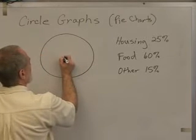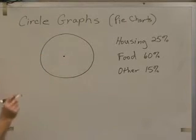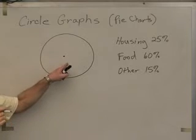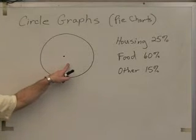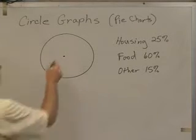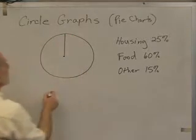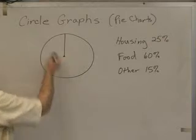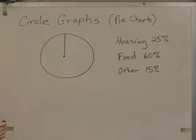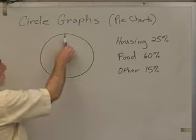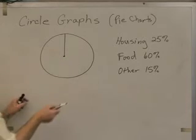Every line that's part of a circle graph is a radius of the circle, meaning it comes out of the center of the circle. And we always start at 12 o'clock. So the first line that we draw is from the center to the top of the circle. Then, typically, we start our segment from there.